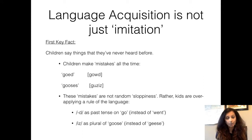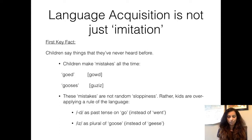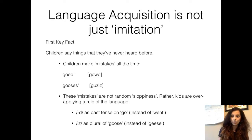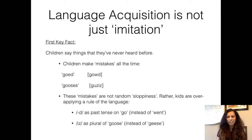First, children make mistakes all the time. This is very common when somebody is actually learning a language. So children make mistakes like 'goed' and 'gooses.' The reason 'goed' is incorrect is because the past tense of 'go' is actually 'went' — it's an irregular verb of English. And the plural form of 'goose' is not 'gooses,' which is what we would expect if it were a regular plural. Goose is again an irregular noun, so you get 'geese' and not 'gooses.' These kinds of mistakes are very common and they are not imitation, because you are not going around hearing 'goed' and 'gooses' from caregivers.